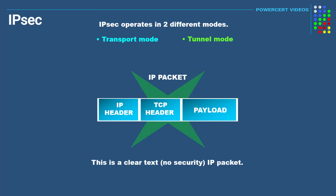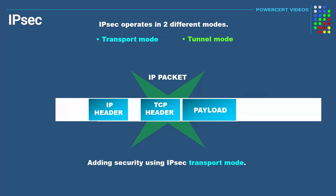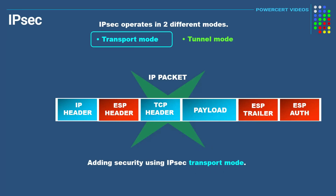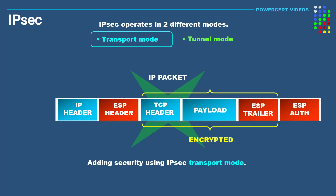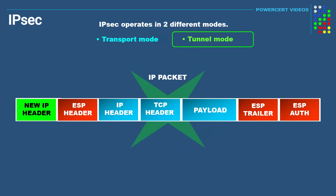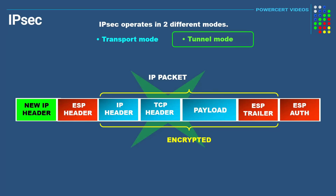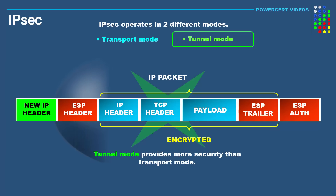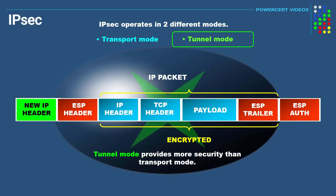If we add security to this packet with IPsec using transport mode, an ESP header, trailer, and authenticator get added to the original packet, and the TCP header, payload, and ESP trailer are all encrypted. Transport mode is used when two devices such as two computers connect over the public internet. In tunnel mode, a new IP header gets attached to the packet, and in addition to the TCP header, payload, and ESP trailer, the IP header also gets encrypted — providing even more security than transport mode. Tunnel mode is used when two sites such as two businesses are connected over the public internet using a VPN.